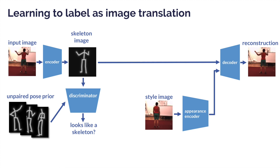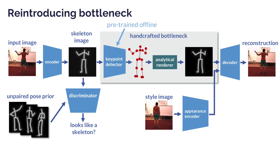To remove the appearance leakage through the skeleton image, we propose a novel autoencoding formulation. The skeleton image is compressed into keypoint coordinates, which are in turn decoded back into a skeleton image using a skeleton image renderer that is based on an analytical distance transform.